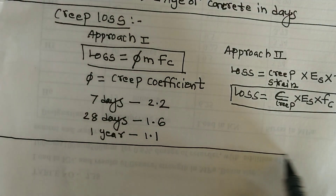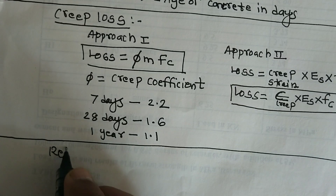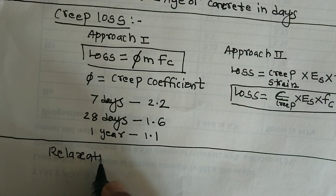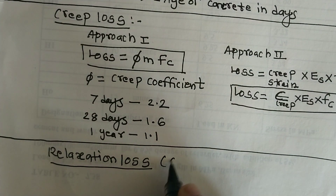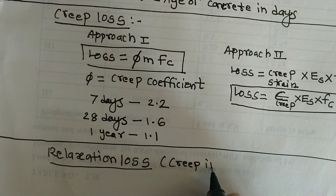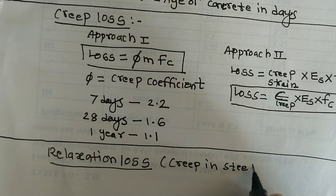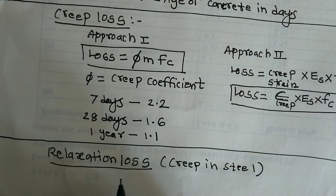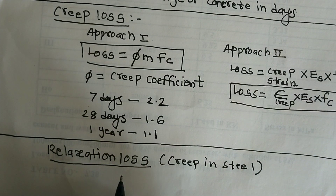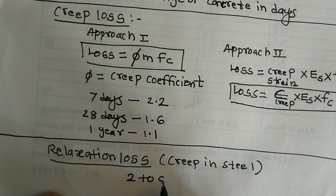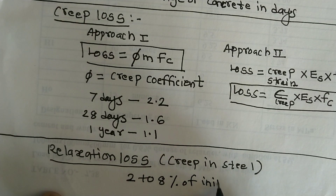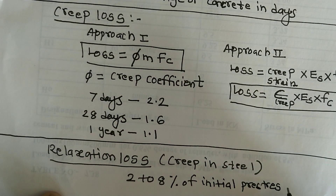Finally, the relaxation loss. This is also called creeping steel loss. Generally, this loss is in between two to eight percent of the initial prestress.